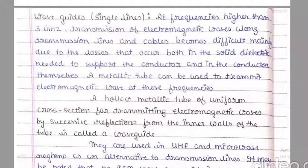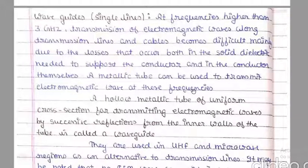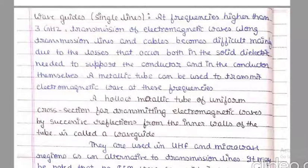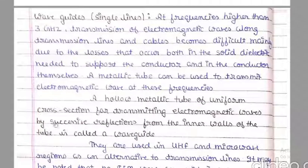A wave guide is a hollow metallic tube of uniform cross section that transmits electromagnetic waves by successive reflections from the inner walls of the tube. At GHz level frequencies, a metallic tube is used to transmit electromagnetic waves. The wave guide serves as an alternative to the transmission line at high frequencies above 2 GHz.